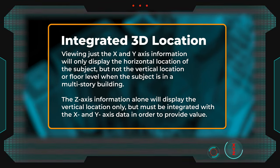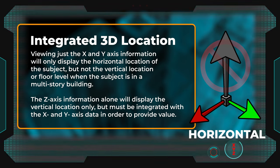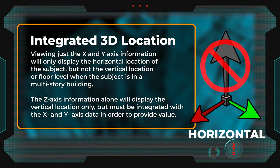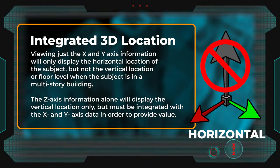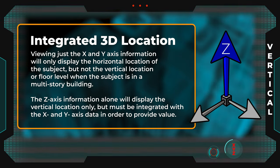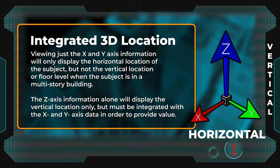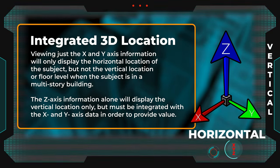Viewing just the X and Y-axis information will only display the horizontal location of the subject, but not the vertical location or floor level when the subject is in a multi-story building. The Z-axis information alone will display the vertical location only, but must be integrated with the X and Y-axis data in order to provide value.